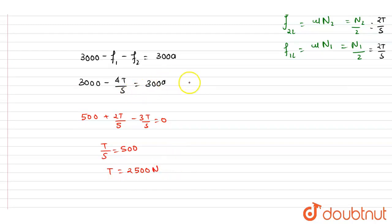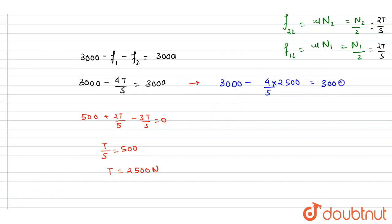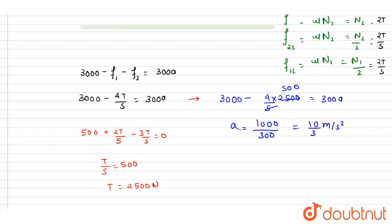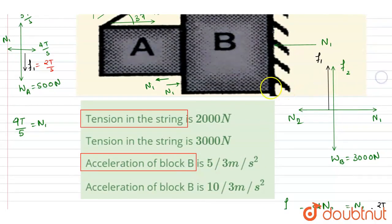Substituting T = 2500 N into the equation for B: 3000 − (4/5)×2500 = 300A, giving 3000 − 2000 = 1000 = 300A, so acceleration of B = 10/3 m/s². Block A does not move due to the constraints. Tension = 2500 N and acceleration = 10/3 m/s², so option D is correct.